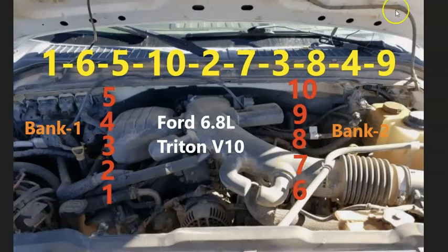Bank one is going to be on the passenger side and bank two is going to be on the driver's side. If you ever need to know what side of the engine is bank one or bank two, just find the number one cylinder on that engine. And that side is always bank one, and the opposite of that is always bank two.